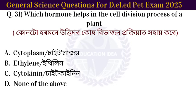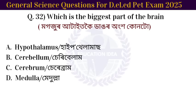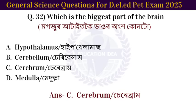Next question: which hormone helps in the cell division process of a plant? The answer is cytokinin.